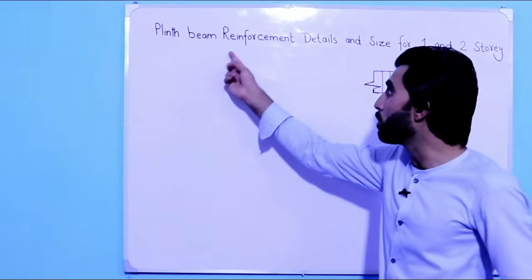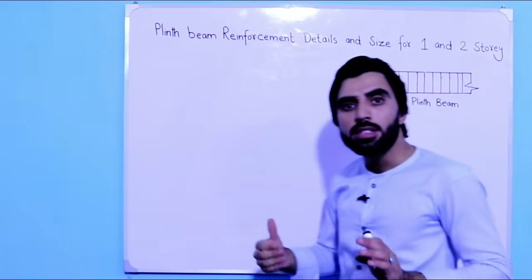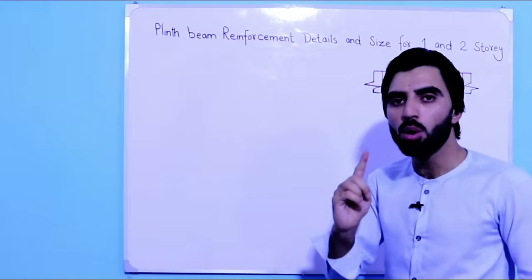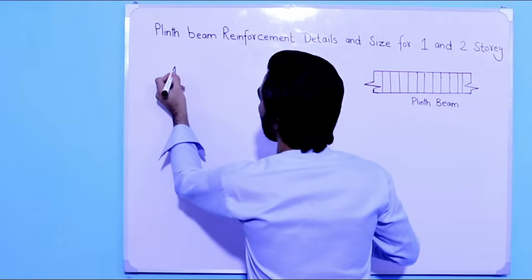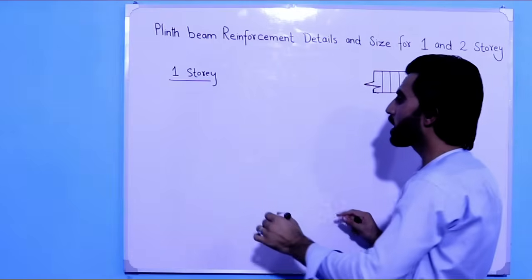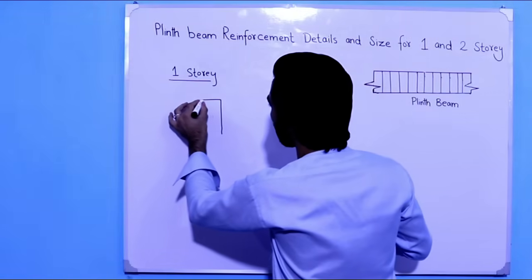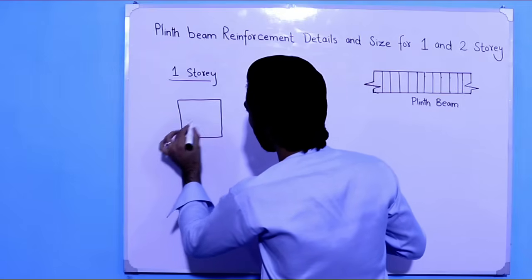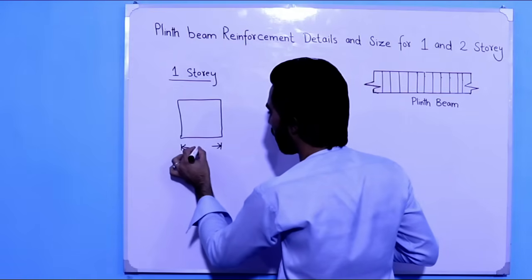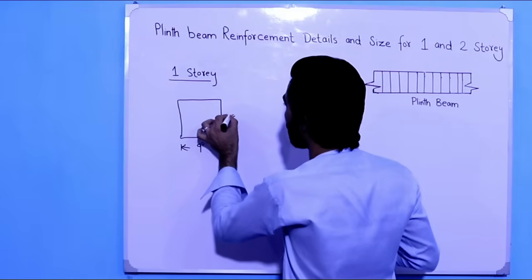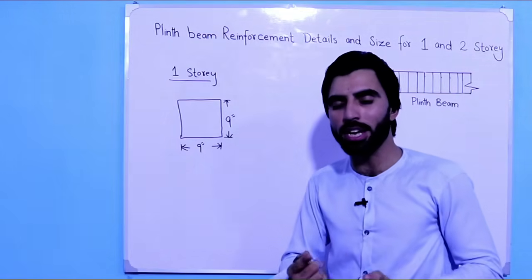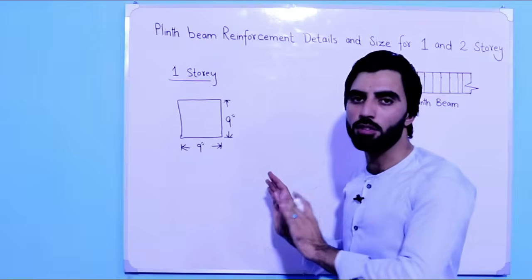Let's start the topic: plain beam reinforcement details and size for one and two story buildings. For a one story building, the size of the plain beam should be 9 inches by 9 inches — the depth is 9 inches and the width or breadth is also 9 inches. This size is suitable to support the load for a one story building.